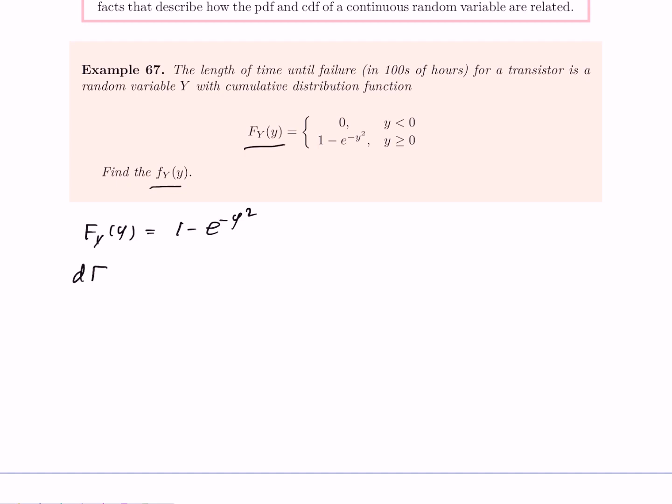Get the derivative of this with respect to y. The derivative of 1 is 0, and the derivative of negative e^(-y^2) gives us negative e^(-y^2) times negative 2y.